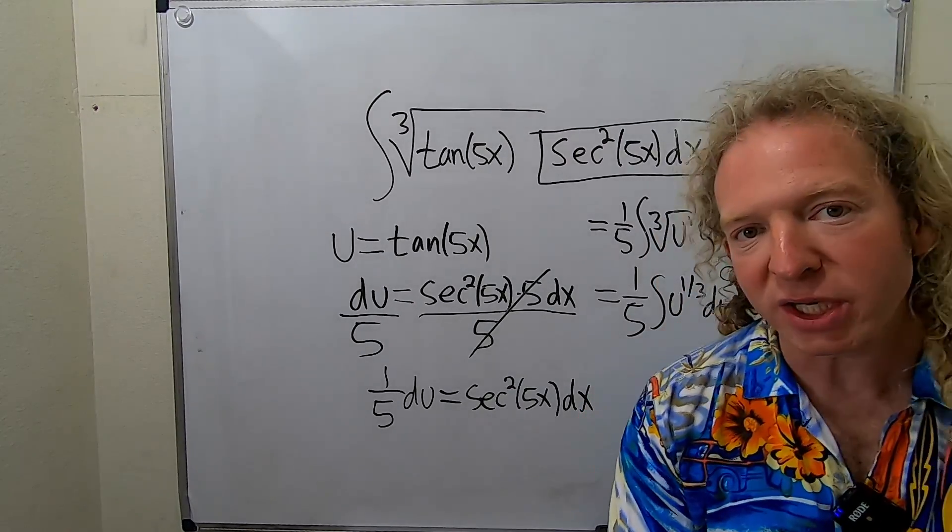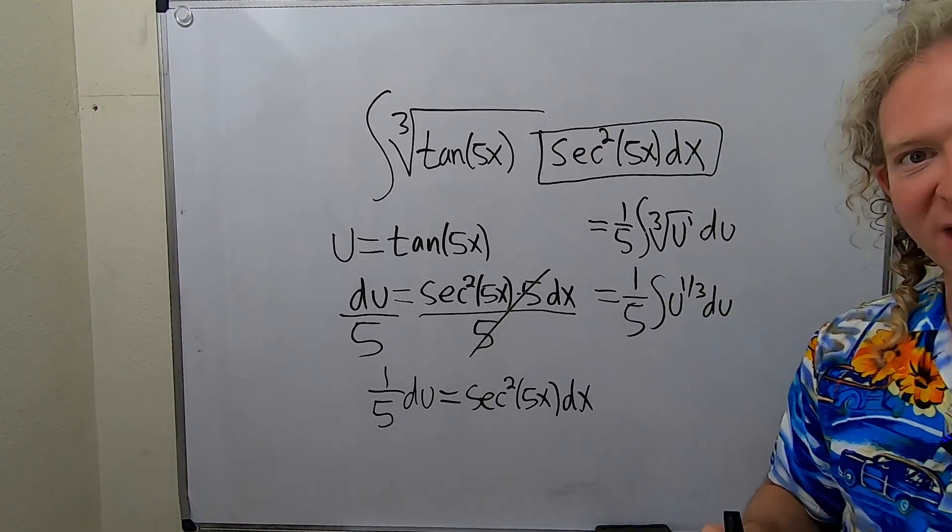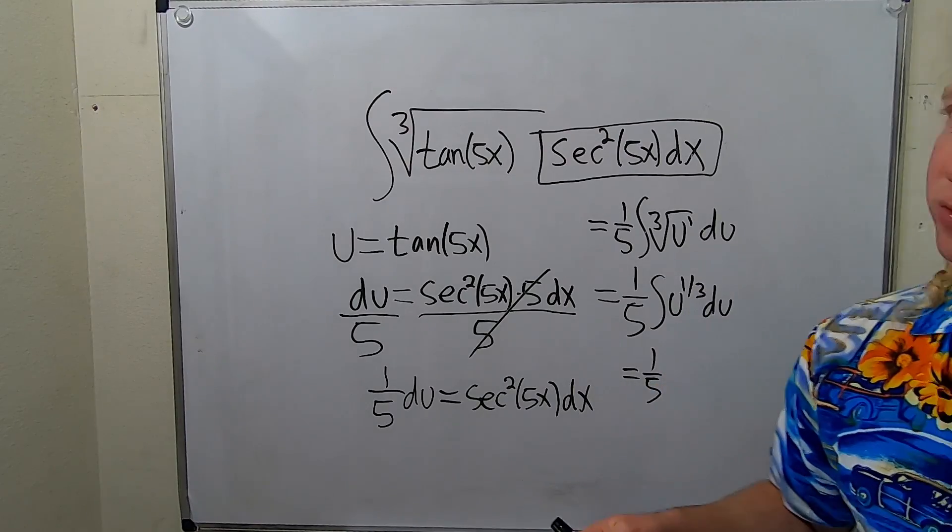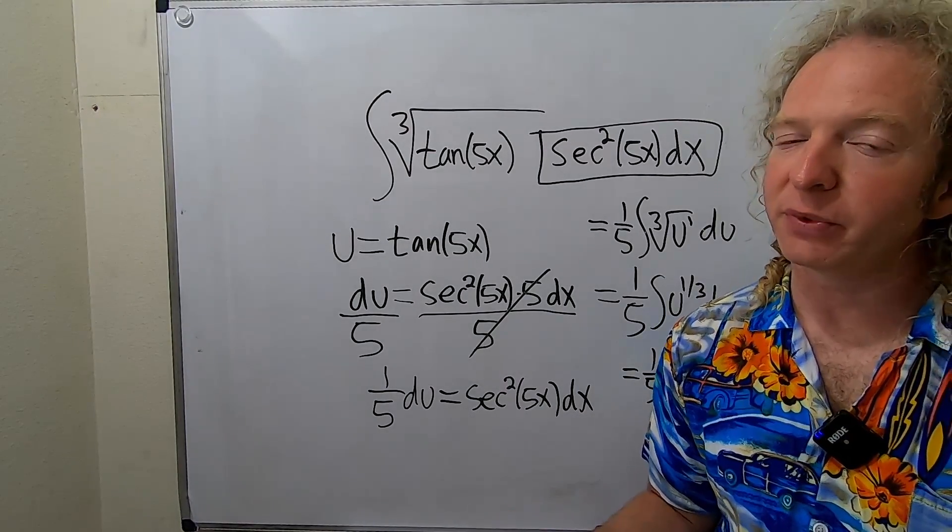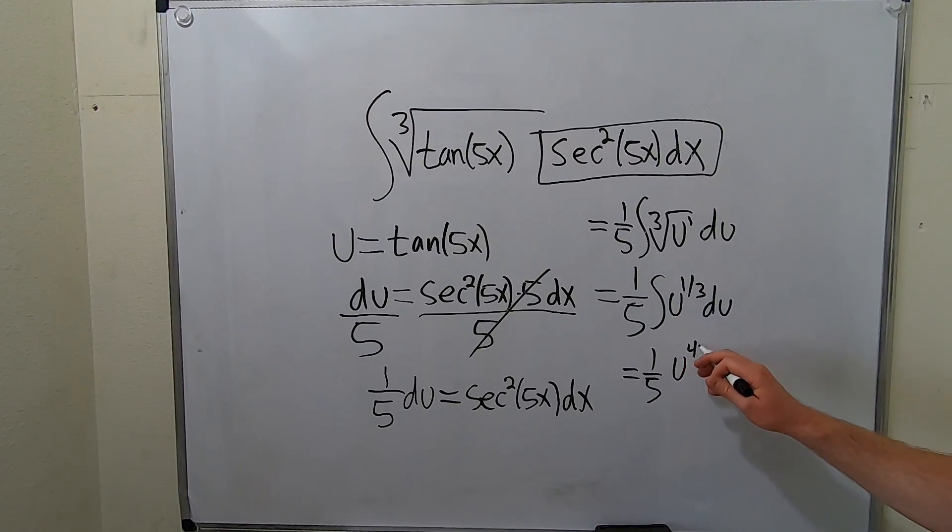So now we can use the power rule. It means we add 1 and divide by the result. So this is 1 fifth. Adding 1, so 1 plus 1 third is 3 thirds plus 1 third. So it's 4 thirds. So it's u to the 4 thirds.